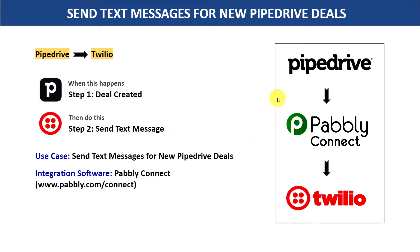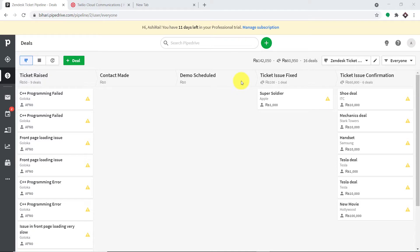In this video, we will be using Pably Connect to integrate Pipedrive and Twilio. The best part of using Pably Connect is there is no need for coding skills or programming knowledge. It can be done easily. Let me show you on my screen. We are going to begin with a small example — this is my Pipedrive account — and the idea is that once a deal is created, the person with whom I am creating the deal will receive an SMS.